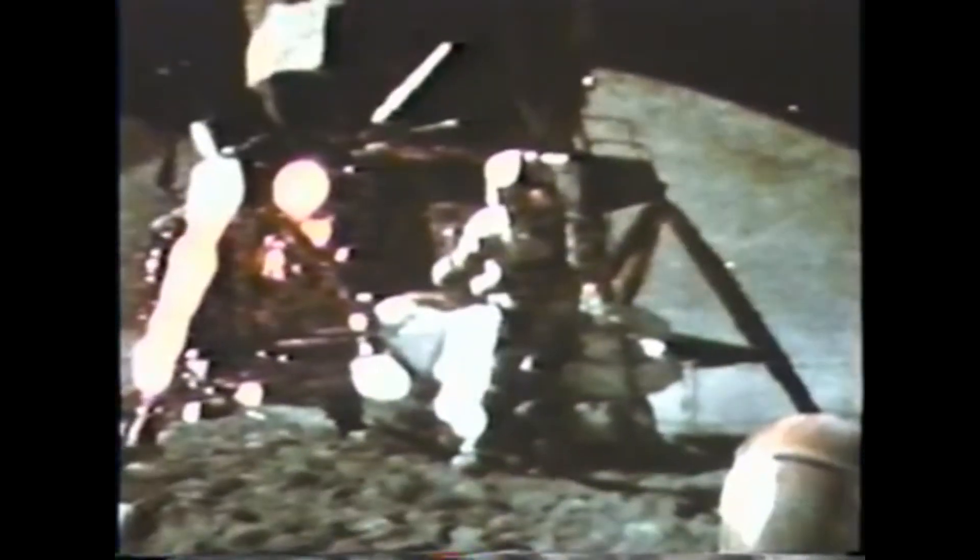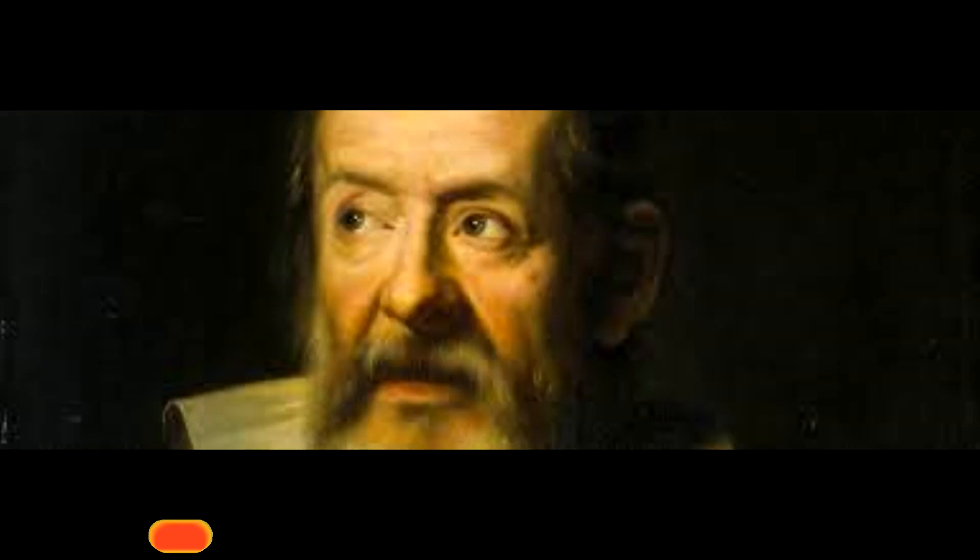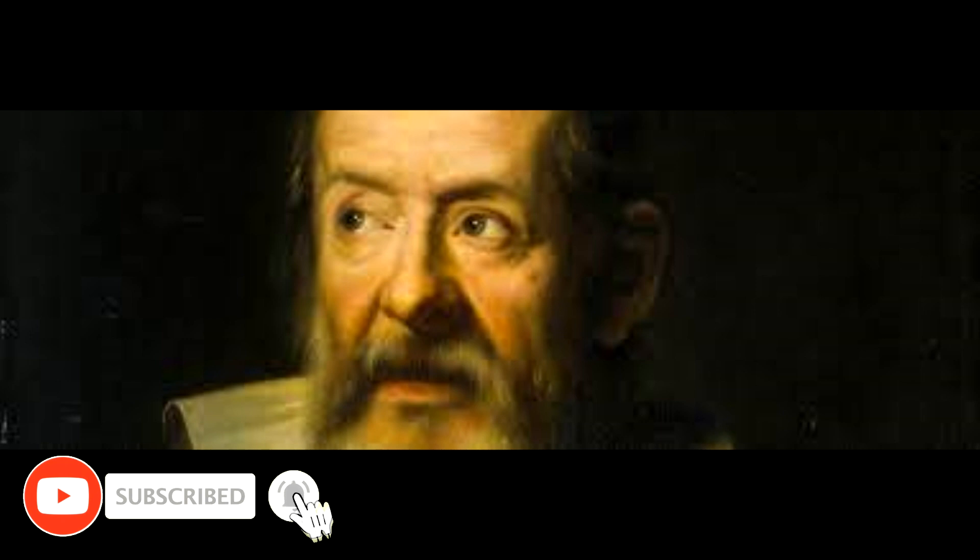We're here today because of a gentleman named Galileo a long time ago who made a rather significant discovery about falling objects in gravity fields, and we thought that where would be a better place to confirm his findings than on the moon. The feather happens to be appropriately a falcon feather for our falcon and I'll drop the two of them here and hopefully they'll hit the ground at the same time. How about that? We knew this happens in the time of Galileo but there is a question here. What is the force responsible for this?